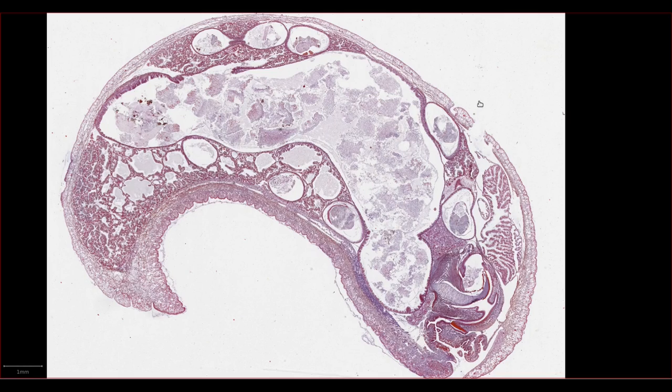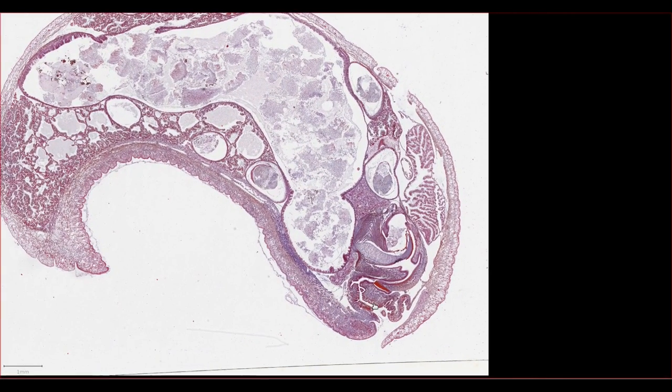We can identify the head, over here, by the presence of structures we would associate with the mouth, such as the radula, which means that the other end of the specimen, over here, must be the other end of the snail. Since we used the radula to orientate ourselves, let's start off with the gastrointestinal tract, which is filling up most of this slide.